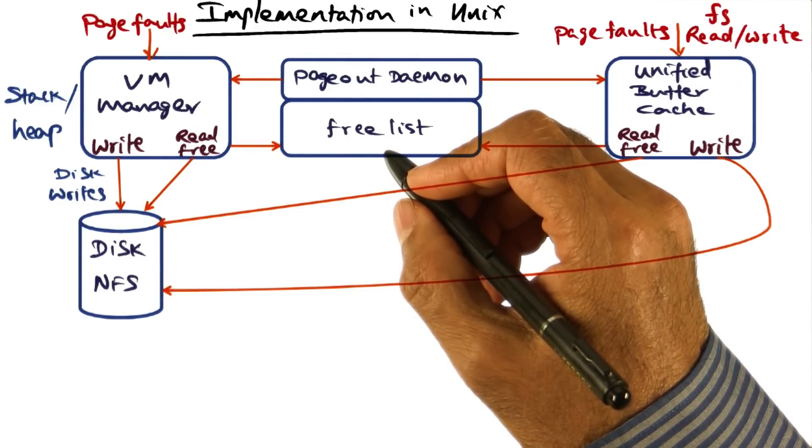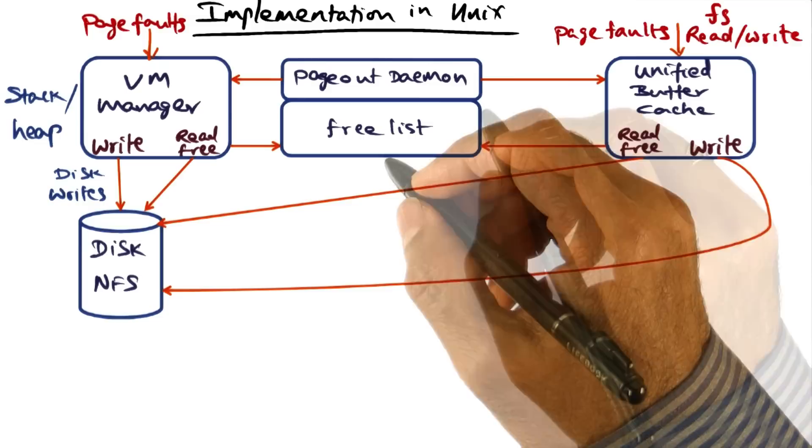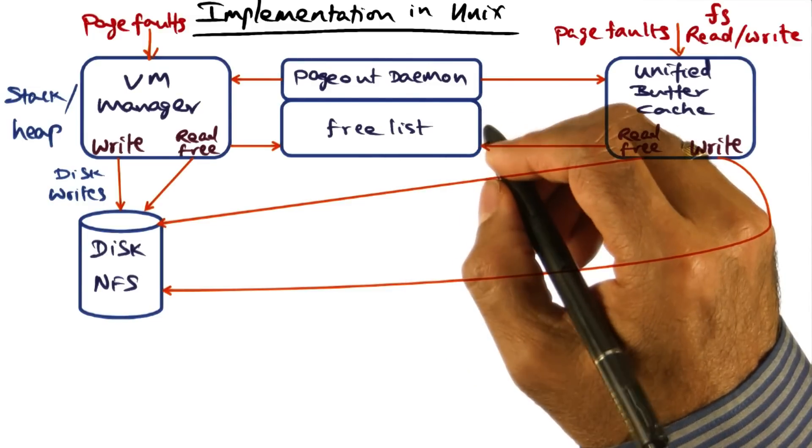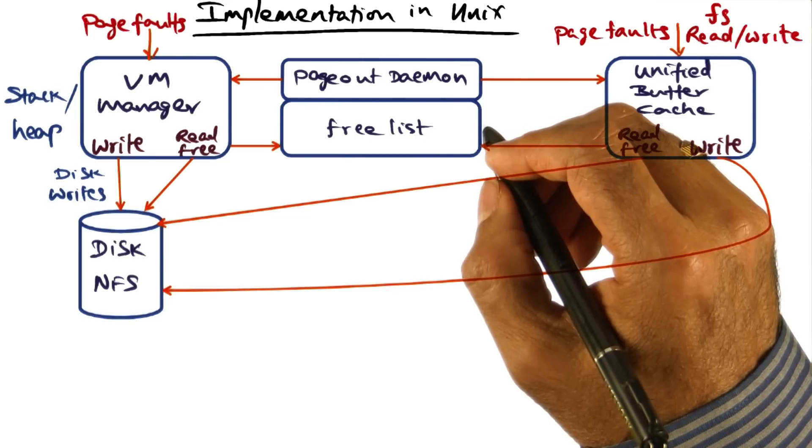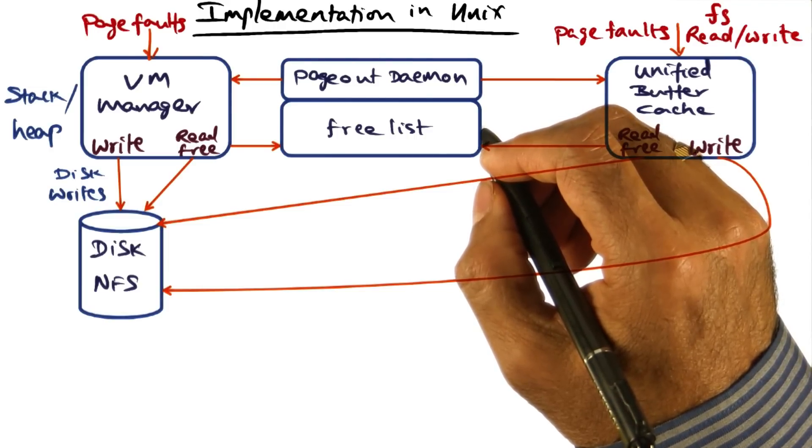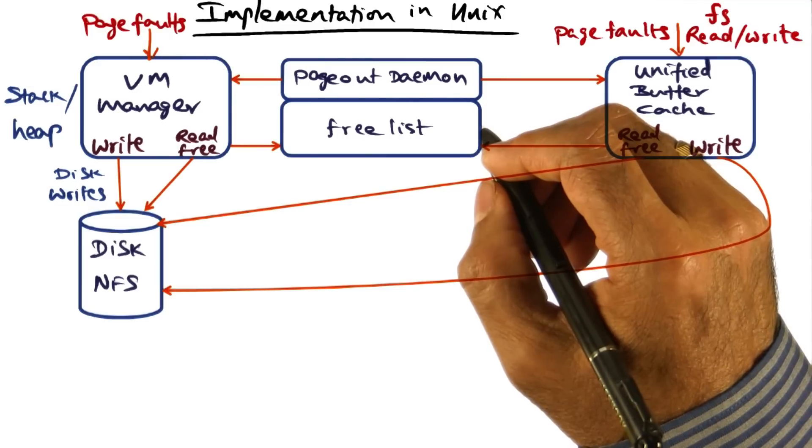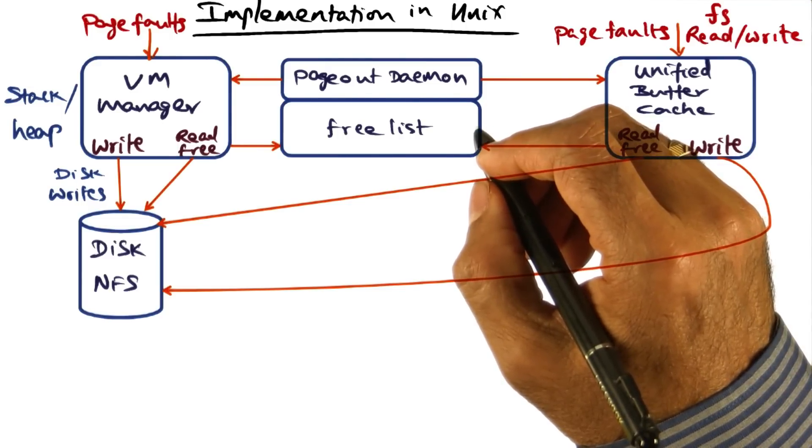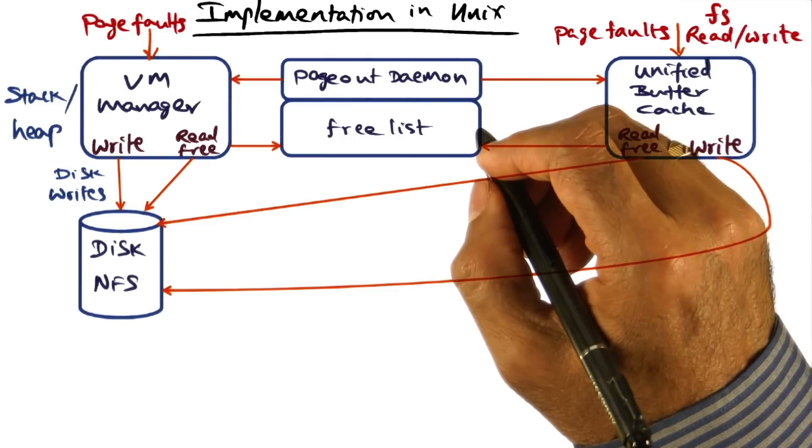And one might say that in systems research, these technical details of taking an idea and working out the technical details of implementing that idea is probably the most important nugget. Even if the idea itself is not enduring, the implementation tricks and techniques that are invented in order to do the implementation of that idea may be reusable knowledge for other systems research. So that's a key takeaway in any systems research, and it is true for this one as well.